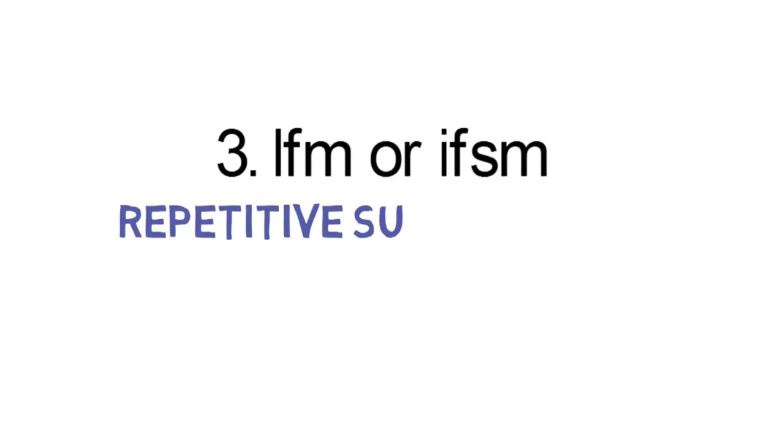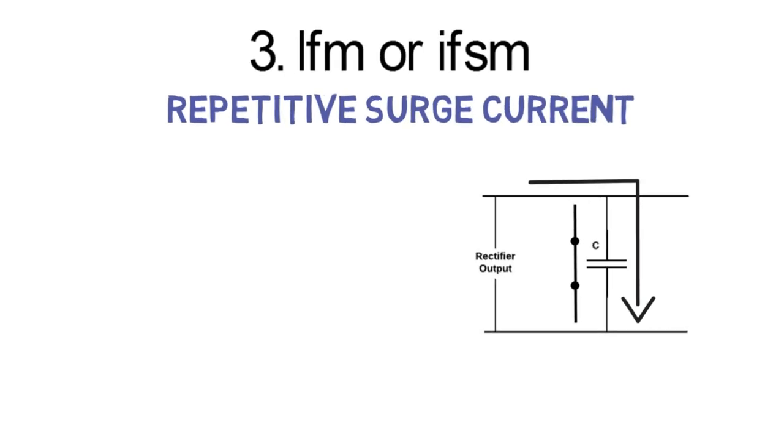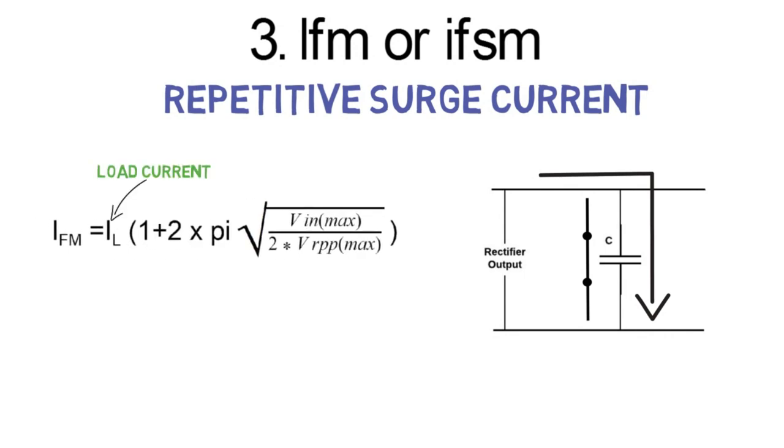Third is the repetitive surge current. At the first instance when the instant power is applied, the filter capacitor looks like a short circuit. Therefore, initially charging current is very large. That current is called surge current. It is calculated by this formula, where Vin max is the maximum input voltage applied to the filter capacitor, and Vr peak to peak max is the maximum permissible ripple at the output of the filter capacitor. This formula is used if the mains frequency is 60 Hertz. For 50 Hertz frequency we have to use this additional formula.